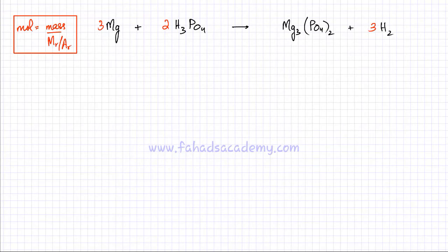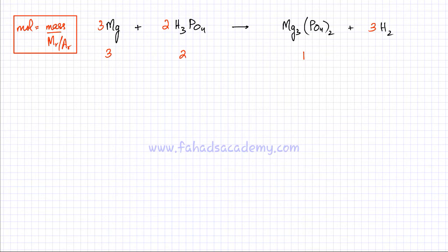Let's practice this on another equation. The balanced chemical equation tells you that three magnesiums are reacting with two molecules of H₃PO₄, producing one magnesium phosphate and three molecules of H₂. That's the ratio in which the reactants are reacting and the products are being produced.